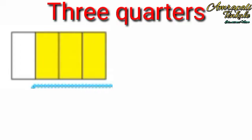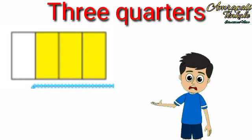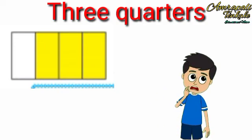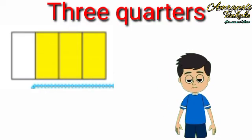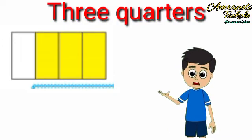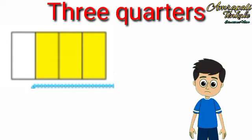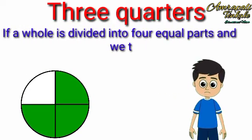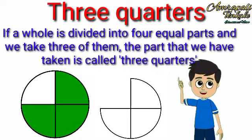Let's learn about three quarters — paan bhaag. Nandhu said: I have drawn lines in this picture so that it gets divided into four equal parts. Three of these parts have been colored; in other words, three quarters of the paper has been colored. If a whole is divided into four equal parts and we take three of them, the part that we have taken is called three quarters.